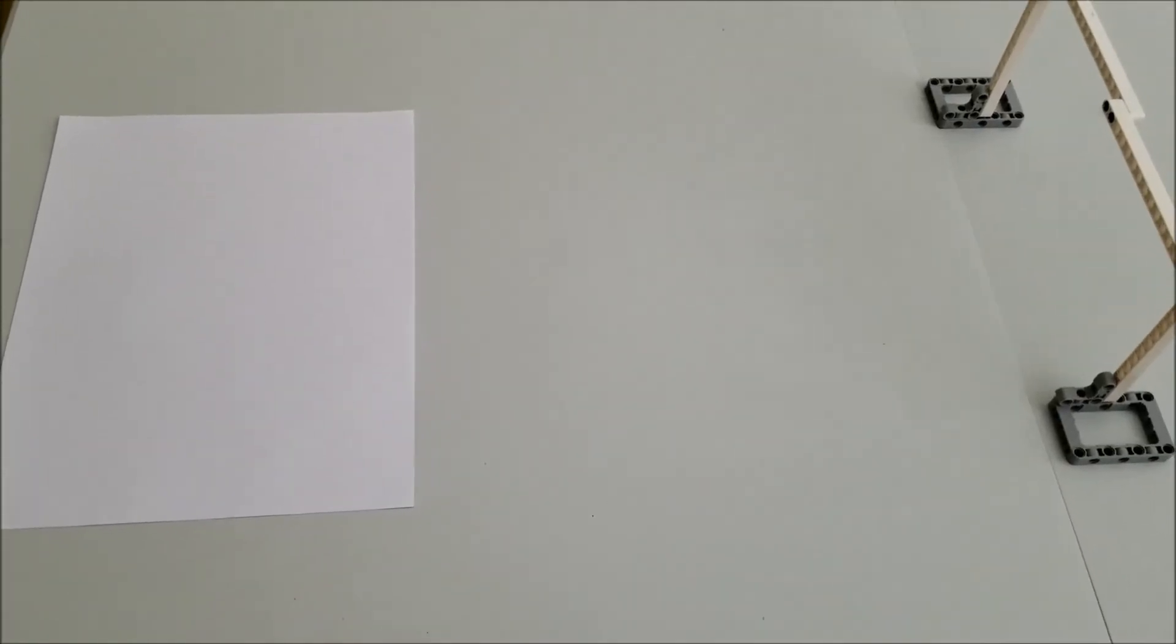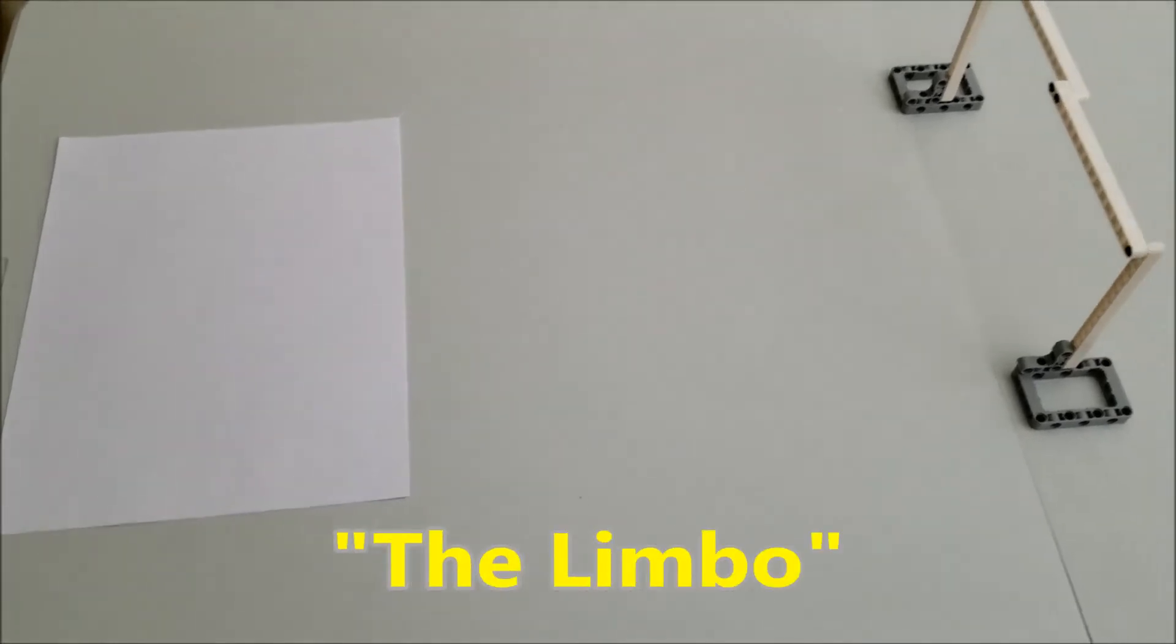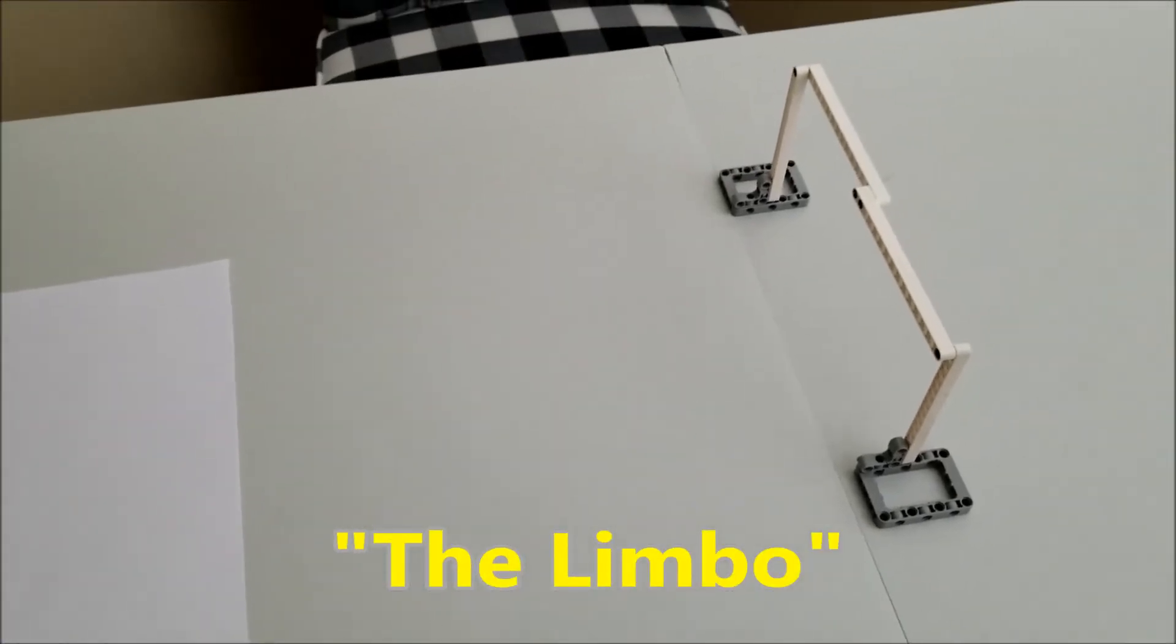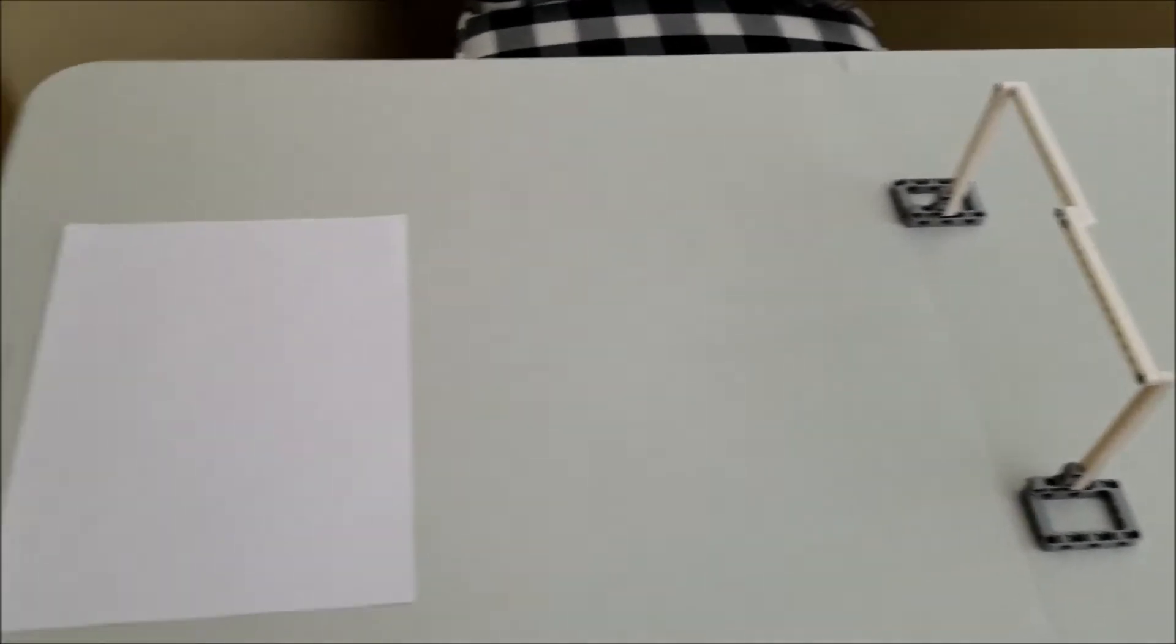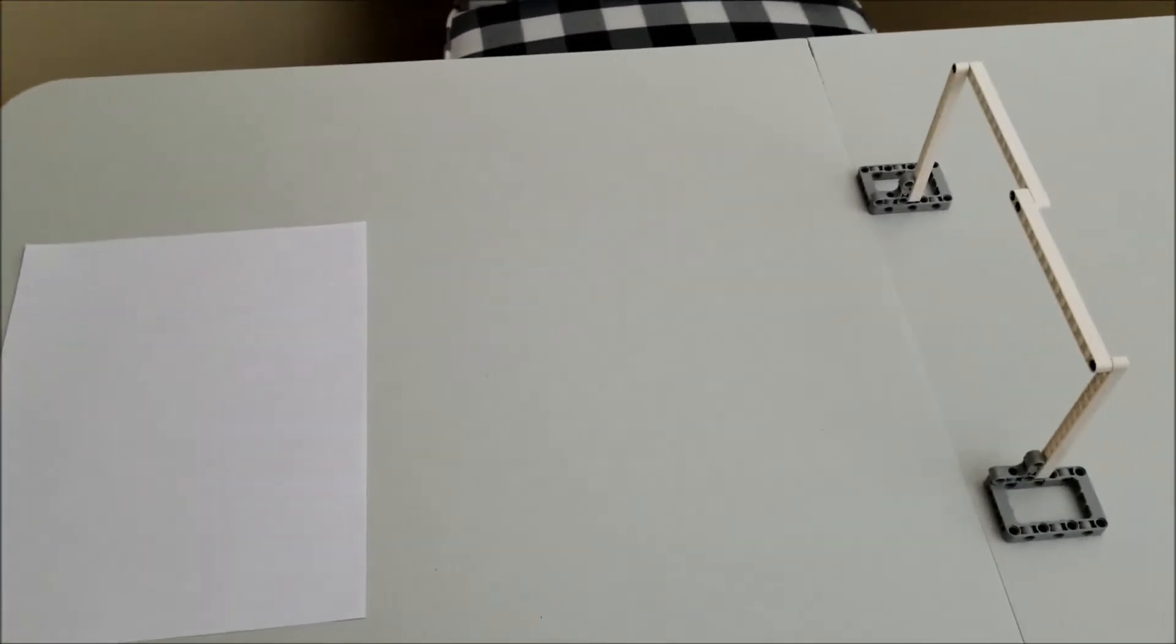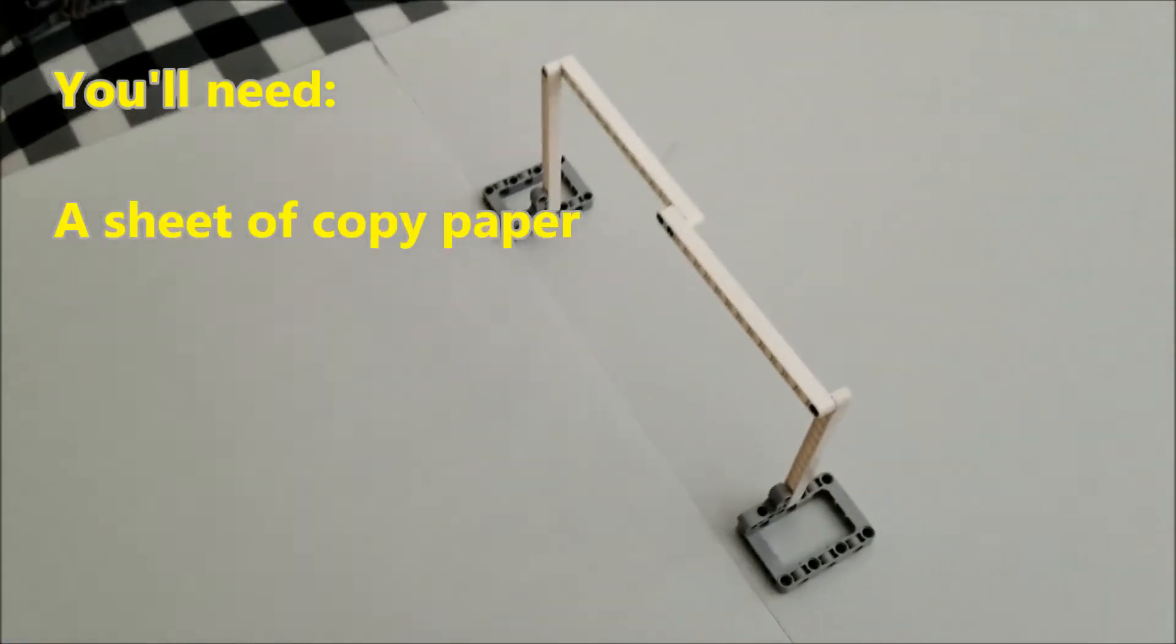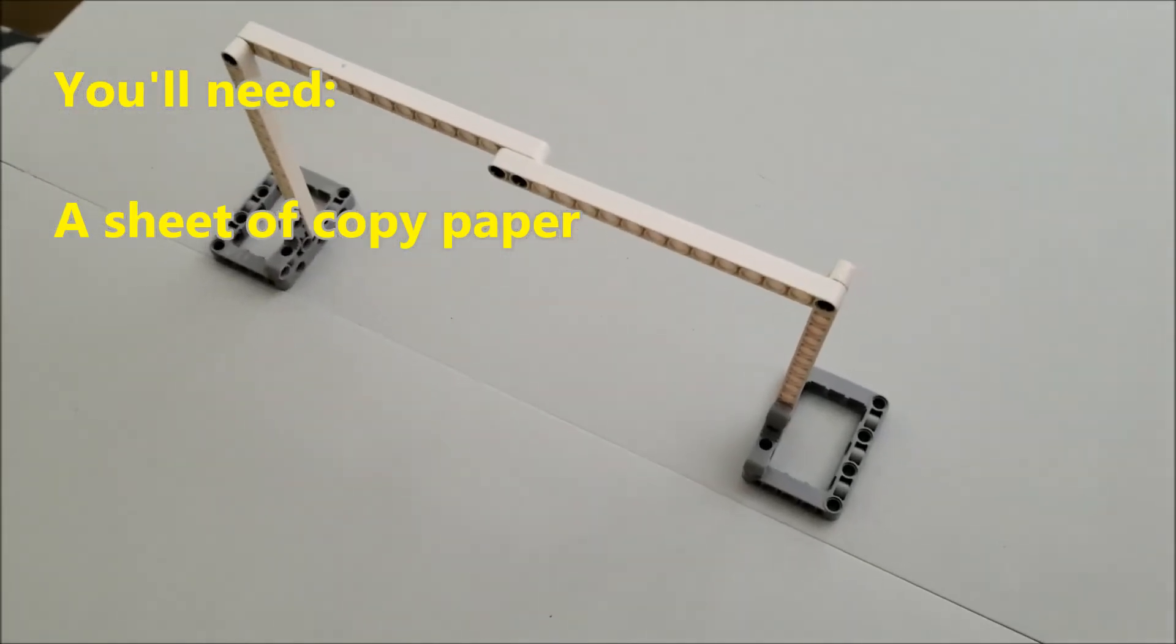Okay, this first challenge is called the limbo. So if you guys know limbo, when they have parties and you try to go underneath the bar, it's going to now be the same thing with your robot. So here's all you need. You just need a sheet of eight and a half by 11 piece of paper. And let me go ahead and show you how you're going to build your limbo bar here.